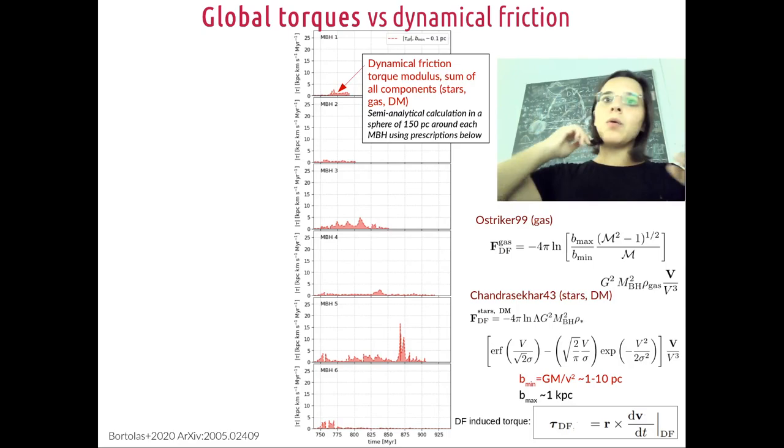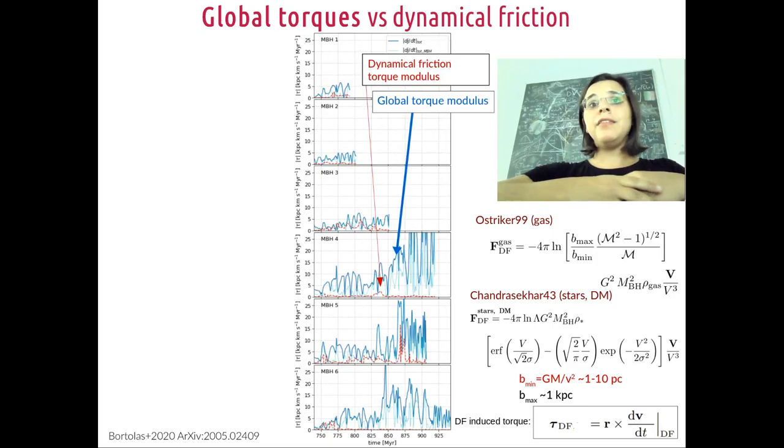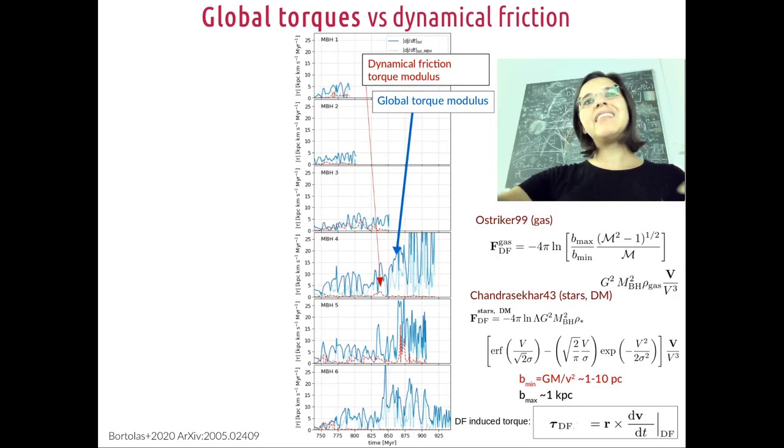And here you see the results. And for comparison, we also computed the global torque that is due to all that is present in the simulation, all the gravitational torque, including also the dynamical friction one. But you will see that this global torque is much, much larger than the dynamical friction torque, meaning that these global torques are the ones that really determine the inspiral and really change the angular momentum of each black hole here.